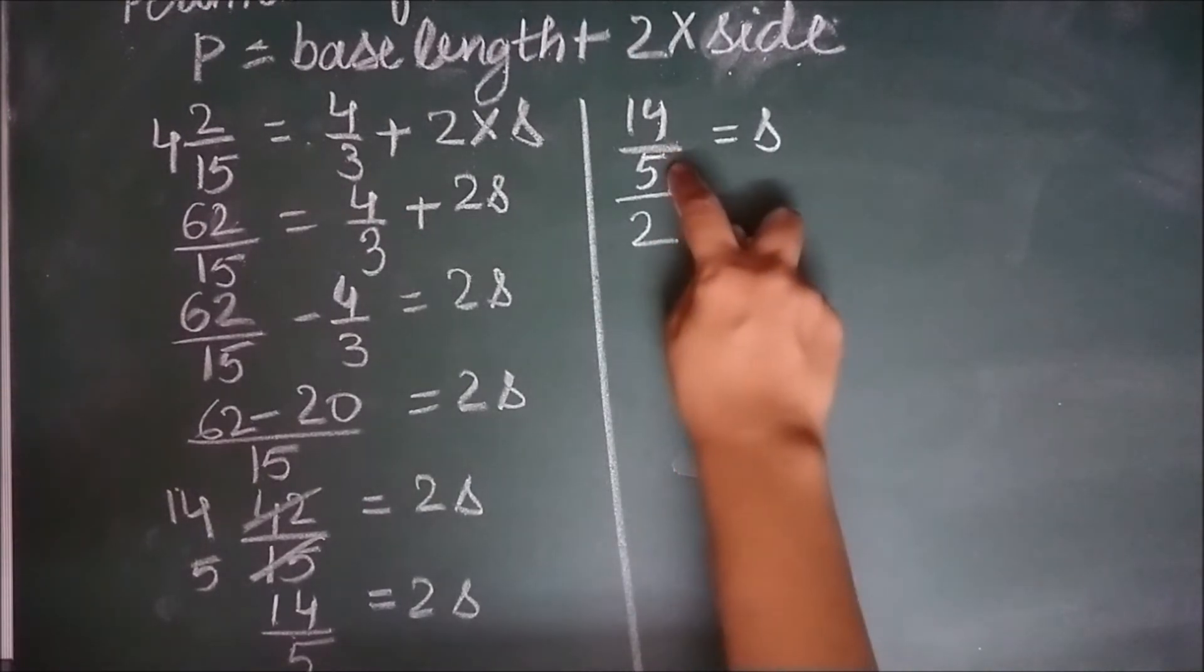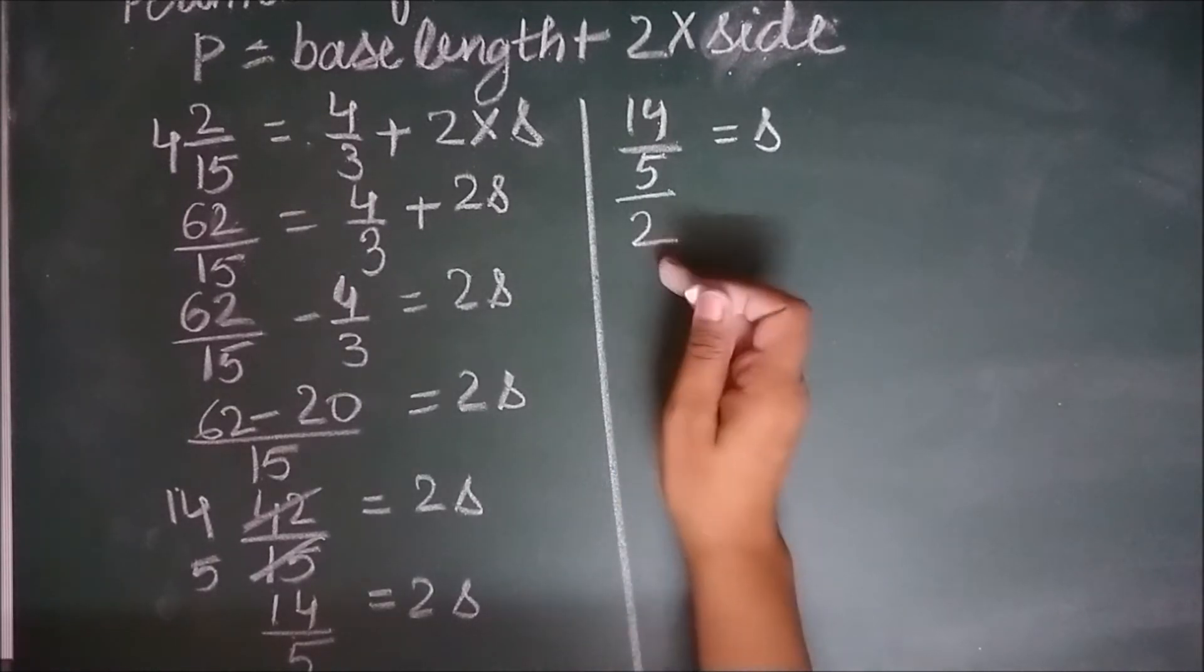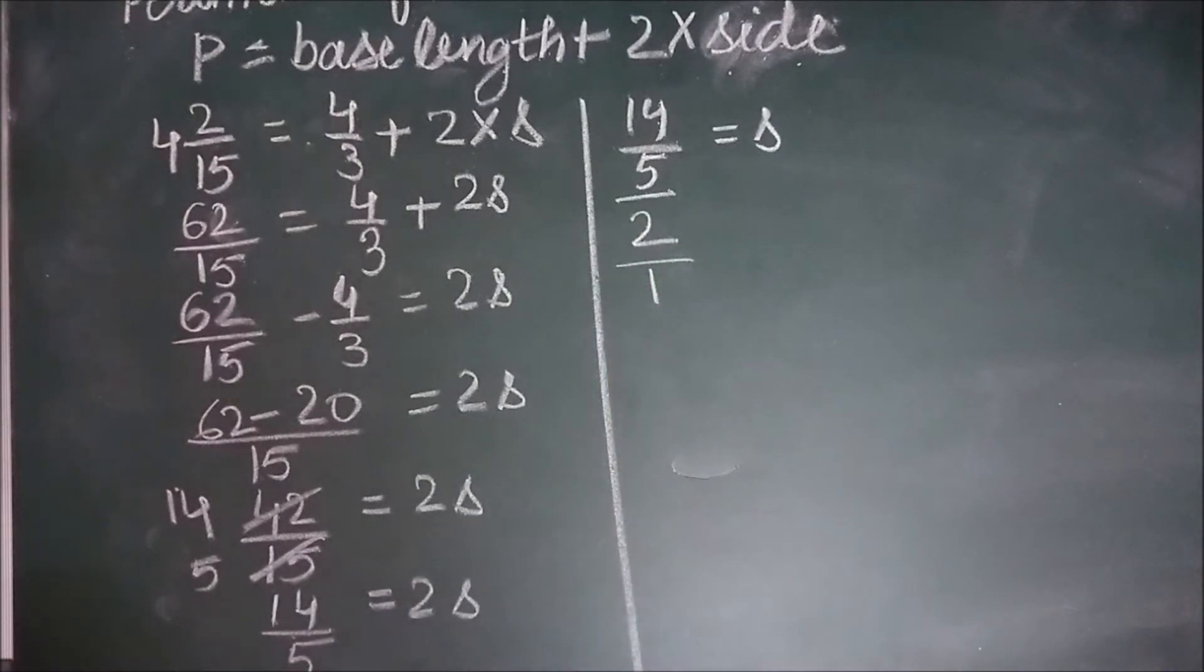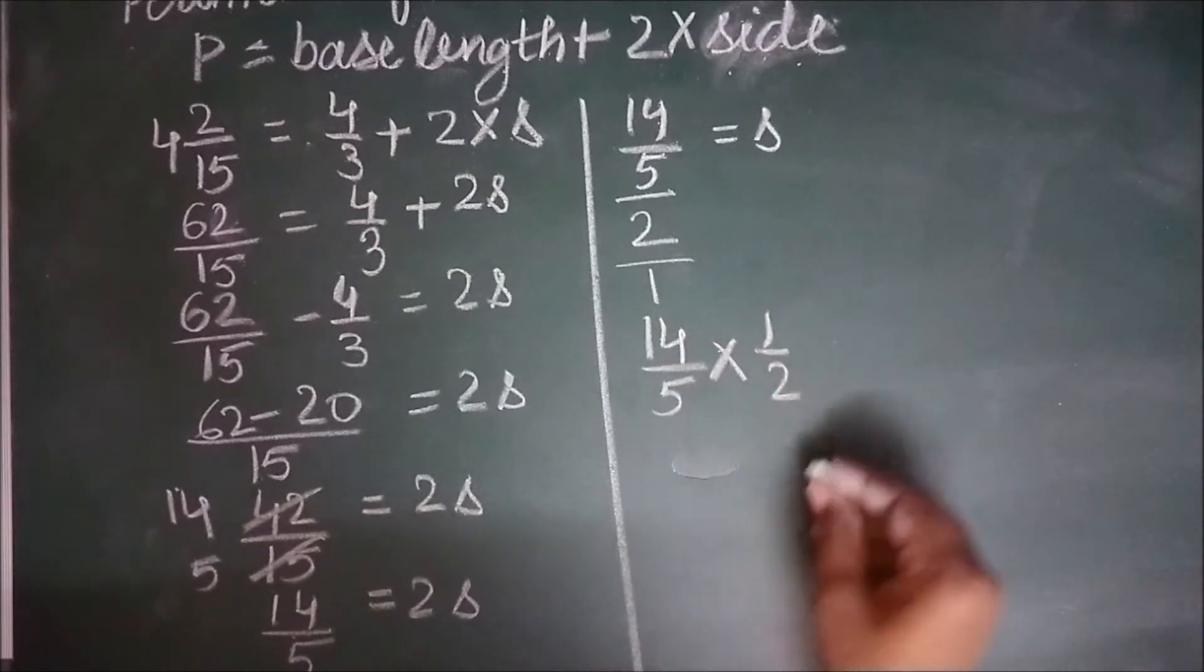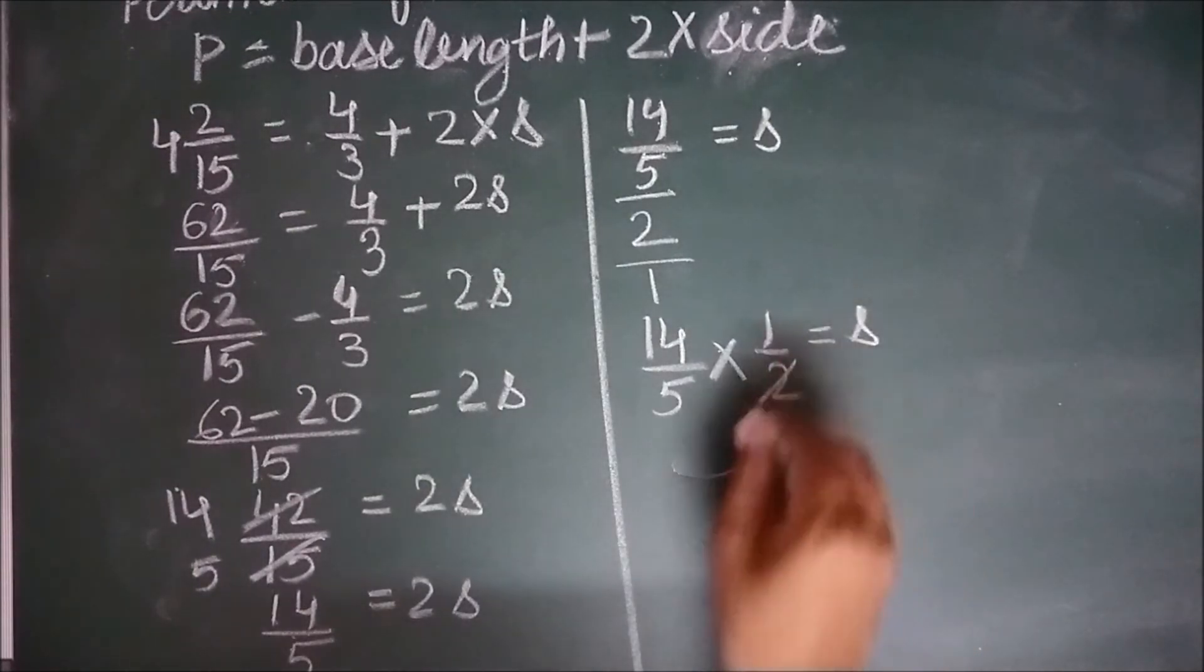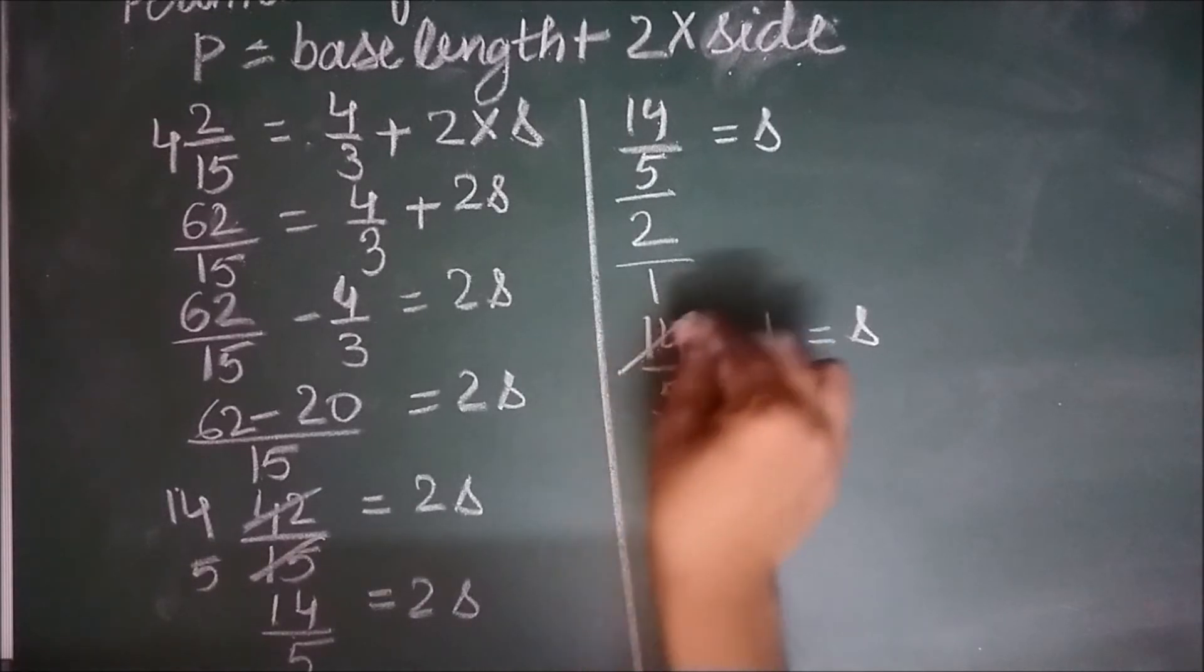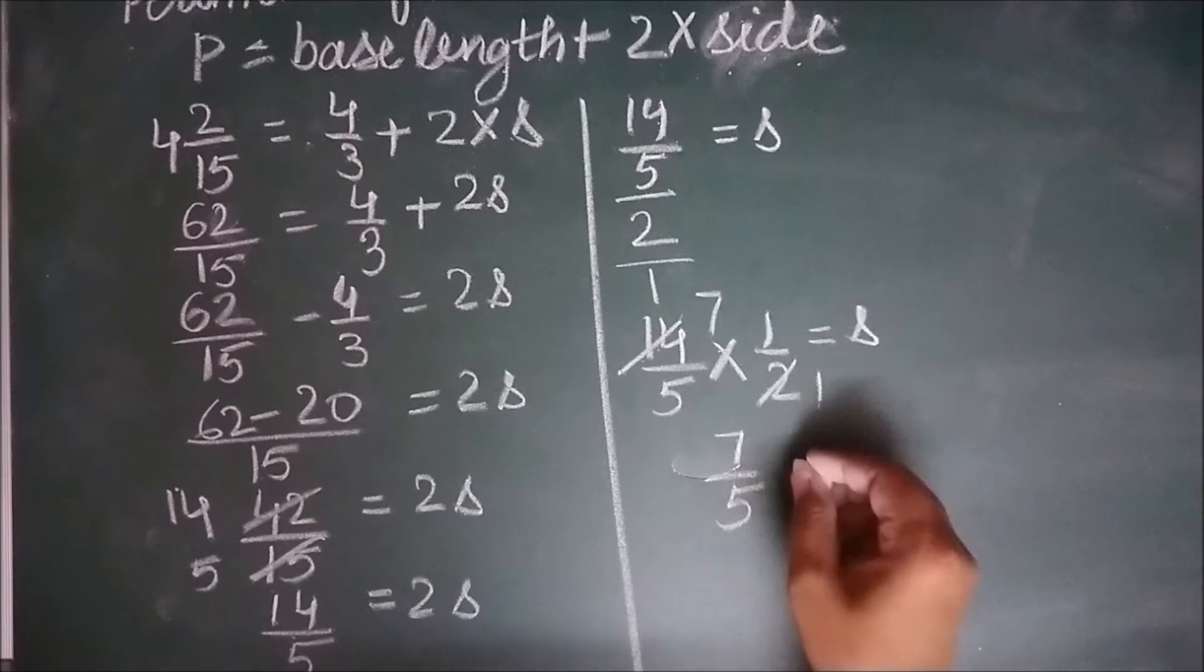Now when you have numerator in fraction, denominator can also be written in fraction as, instead of 2, you can write it as 2 by 1. How you move it upwards into multiplication? By reciprocating the denominator. So instead of 2 by 1, it will become 1 by 2. So you get here 14 by 5 into 1 by 2 equal to S. Any cancellations possible? Yes. 2 1s are 2. 2 7s are 14. 7 into 1 is 7. 5 into 1 is 5. Equal to S.